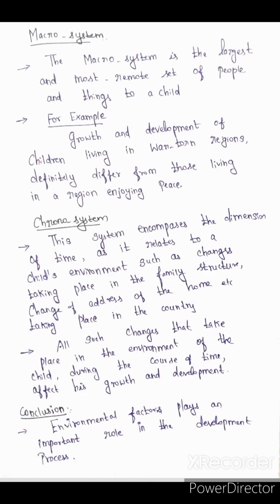In conclusion, environmental factors play an important role in the development process. Environmental factors are one important role in the environment and the development of the child. If there is a good environment, that promotes positive development of the child, while a bad environment leads to negative development.